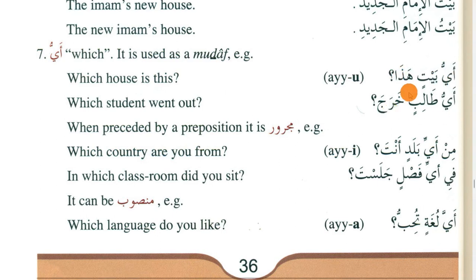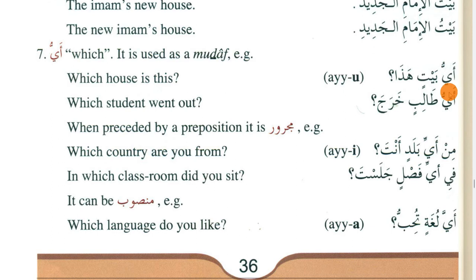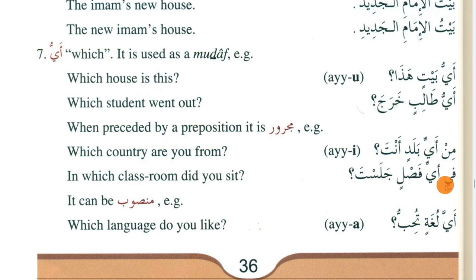'Ayya' can be either mubtada or khabar in sentences. We know that mubtada and khabar are marfa, that is why we use damma. Here, when 'ayya' has a harf jar before it — for example 'fee' — it becomes majroor, which is the reason we use kasra with 'ayya'.